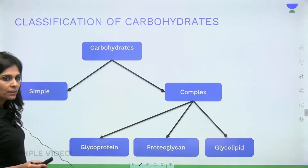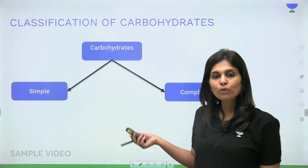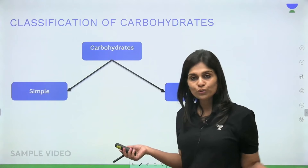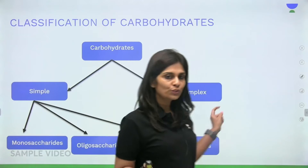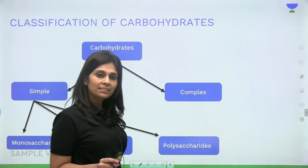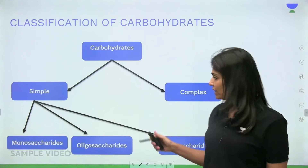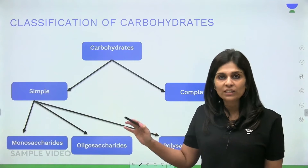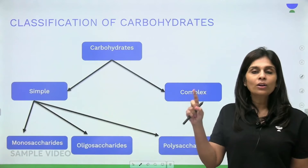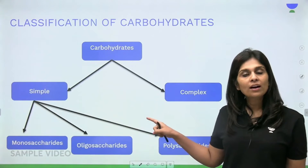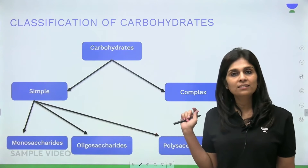In this video, we will discuss simple carbohydrates. Simple carbohydrates are further classified depending on the number of carbohydrate units they have: monosaccharides, oligosaccharides, and polysaccharides. Monosaccharides have only one sugar unit. Oligosaccharides have from 2 to 10 units — remember that disaccharides are also a type of oligosaccharide. Polysaccharides have 11 or more units.